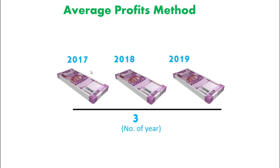For example, in 2017, 2018, and 2019, you can add any profit numbers. The formula for the average profit method is to calculate the total profit — add all the profit figures together — then divide by the number of years. For instance, if there are 3 years, you divide by 3.